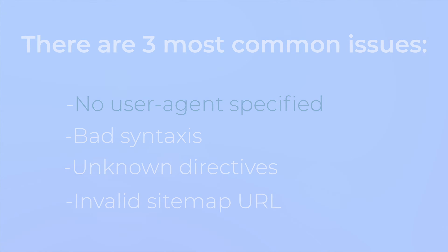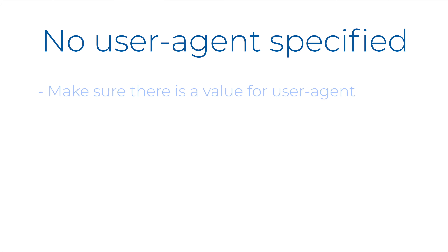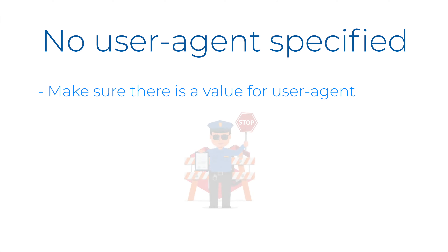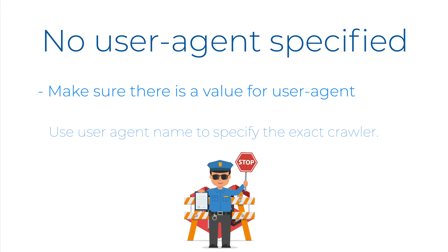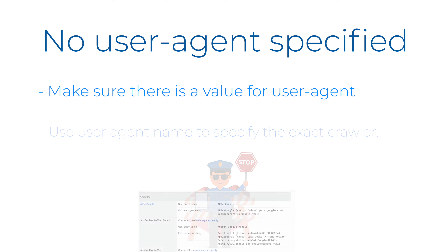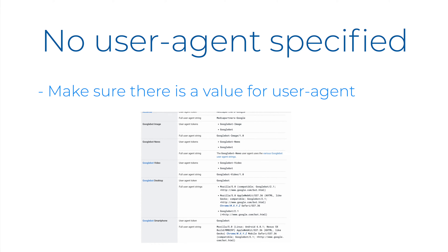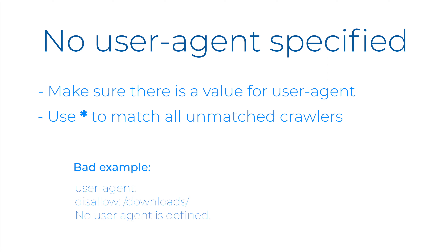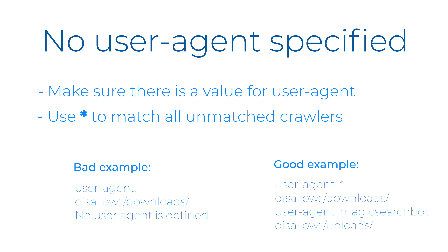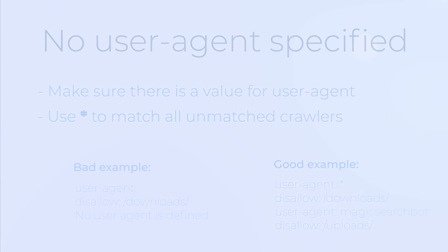Let's look into each of them. First, make sure there is a value for user agent. User agent names tell search agent crawlers which directives to follow. To specify a particular search agent crawler, use a user agent name from its published list. For example, here is Google's list of user agents used for crawling. Use an asterisk to match all otherwise unmatched crawlers. Here is a bad example of this rule and here is a good one, where a general user agent and a magic search bot user agent are defined.